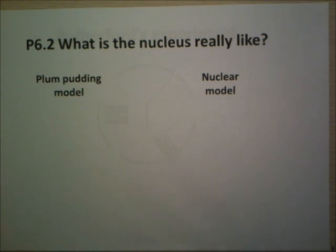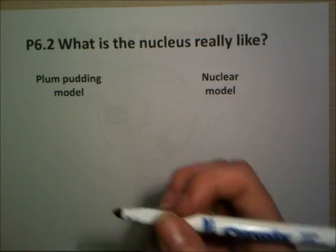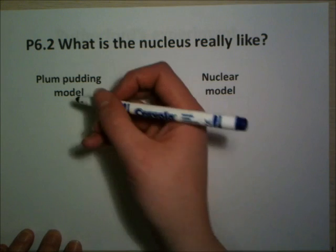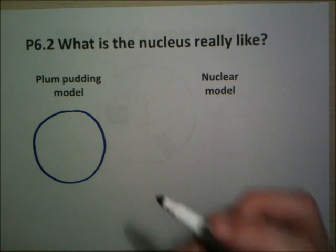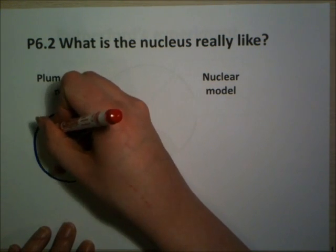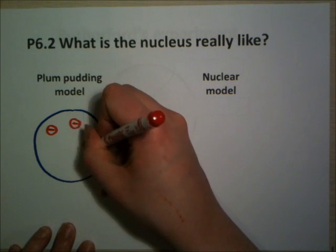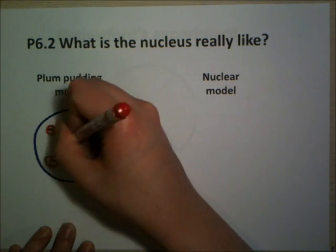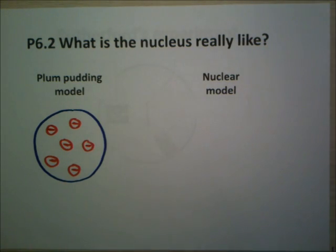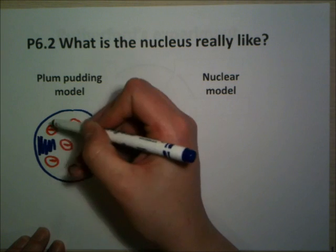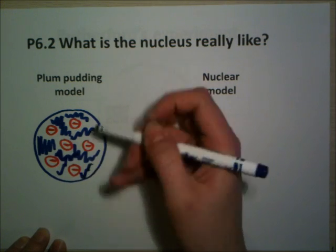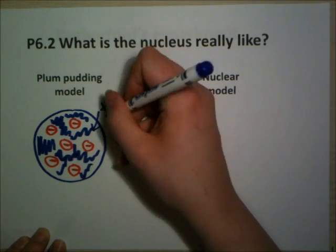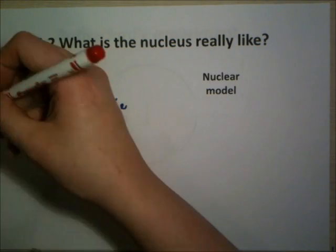Someone called JJ Thompson, who discovered the electron, thought that the atom looked a bit like a plum pudding. They're kind of like Christmas puddings. His model was called the plum pudding model because he thought that the atom was a round ball with lots of negative electrons in there, like currants running through a plum pudding.